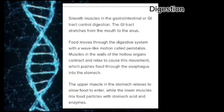Smooth muscles in the gastrointestinal or GI tract control digestion. The GI tract stretches from the mouth to the anus. Food moves through the digestive system with a wave-like motion called peristalsis. Muscles in the walls of the hollow organs contract and relax to cause this movement, which pushes food down the esophagus into the stomach. The upper muscles in the stomach relax to allow food to enter, while the lower muscles mix food particles with stomach acid and enzymes.